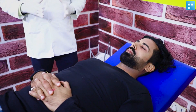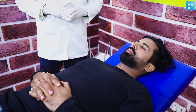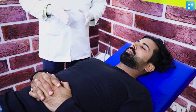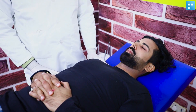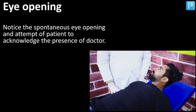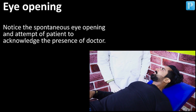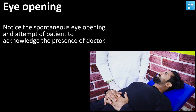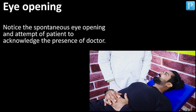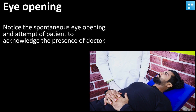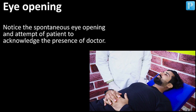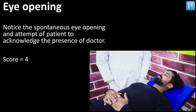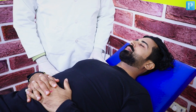We shall now be discussing the eye opening component of the Glasgow Coma Scale. In the first scene, when I come near the patient and touch him, you can notice: 'Hi. How are you doing? I am perfectly fine. I can go home. Great. You can definitely go home.' The patient opened his eyes spontaneously and was talking in a very coherent fashion, so we assign a score of 4. I am going to enact the scenario once again.